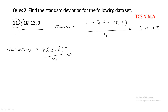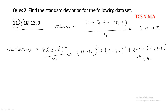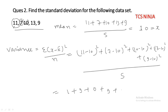We find how much each term deviates from the mean of 10. The variance equals (11−10)² + (7−10)² + (10−10)² + (13−10)² + (9−10)², all divided by 5. That gives us 1 + 9 + 0 + 9 + 1 = 20, divided by 5, which equals 4.